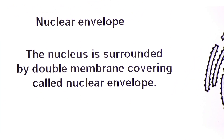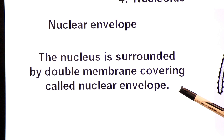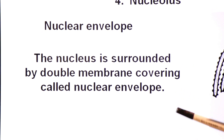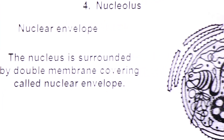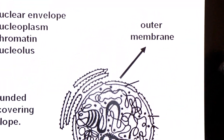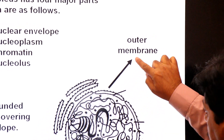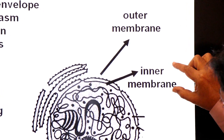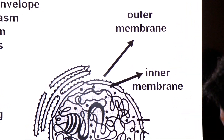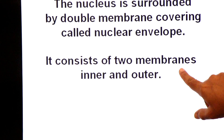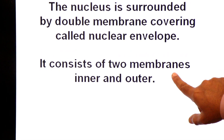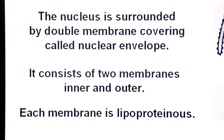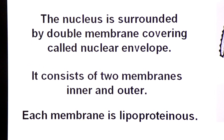What is nuclear envelope? The nucleus is surrounded by a double membrane covering called the nuclear envelope. It consists of two membranes — an inner membrane and an outer membrane. Each membrane is lipoproteinous, meaning it is made up of lipids and proteins.